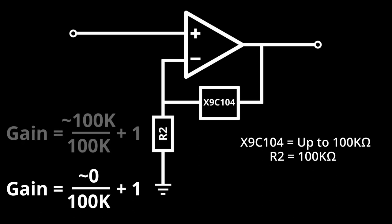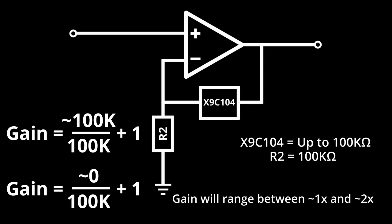When the digipot is turned all the way up, the gain would be nearly 100k divided by 100k, plus 1. So 2. This means our gain would range between 1 and 2x amplification depending on how we adjust the resistance of the digipot.